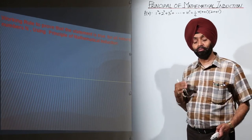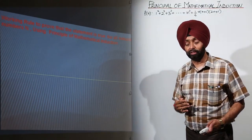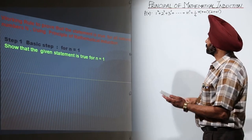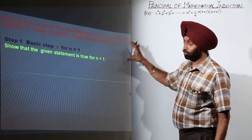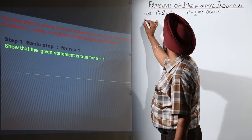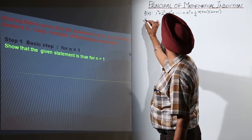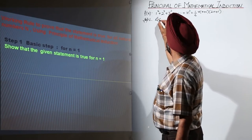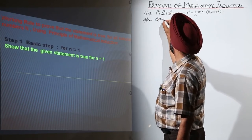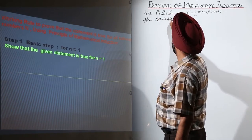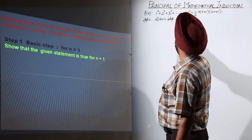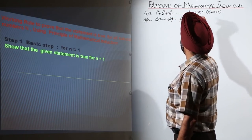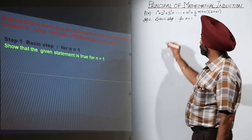Step 1 is called the basic step. We are writing step 1, the basic step. In the basic step we will write for n equal to 1. This is the basic step.